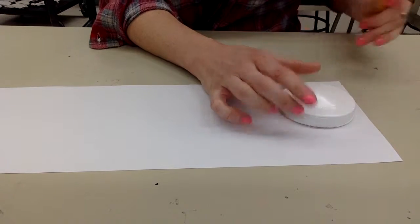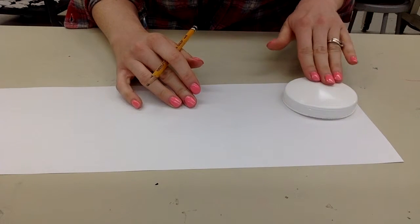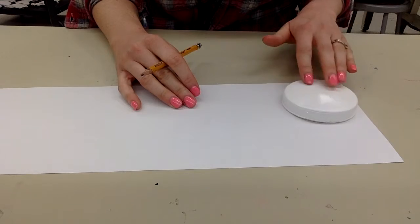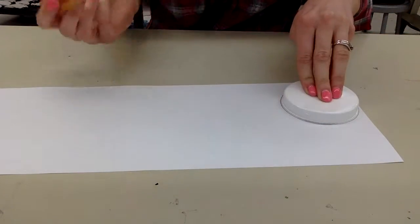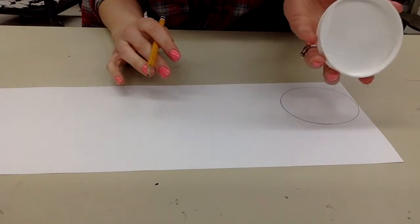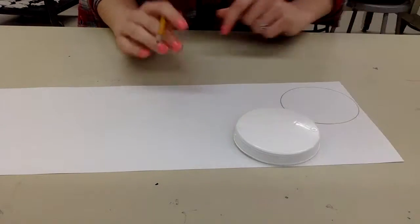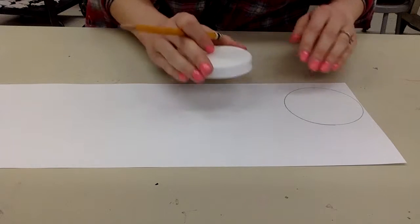So you're going to start at the very edge of your paper, either in the bottom or in the top, and you're going to begin to trace around your stencil. Make sure that you hold it right in the middle, and you trace.